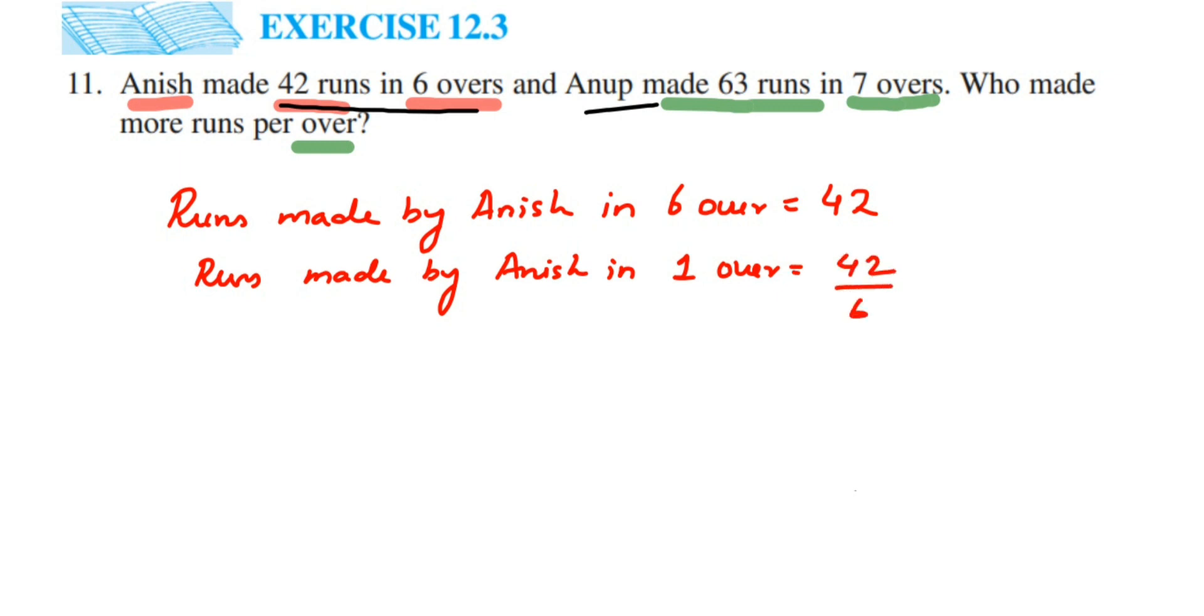This is 42 runs. If you don't write, that's okay because we have written runs here. So 42 divided by 6 is equal to 7. So he made total 7 runs in 1 over.